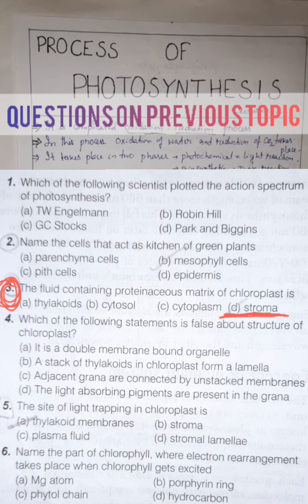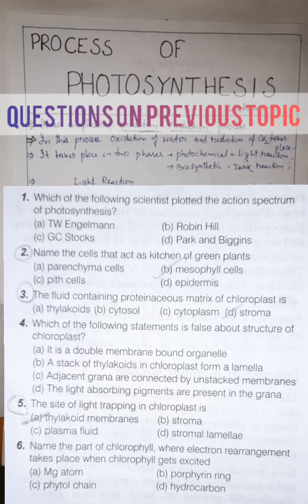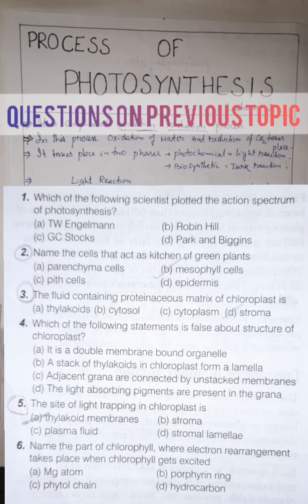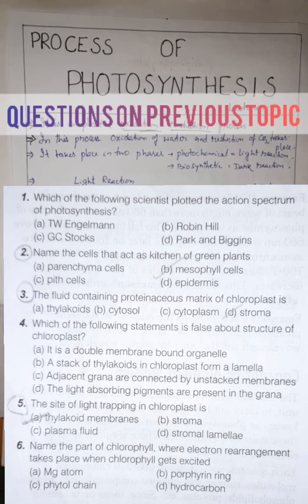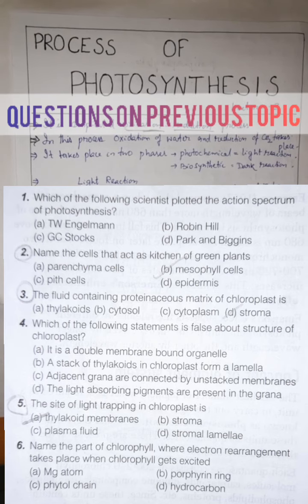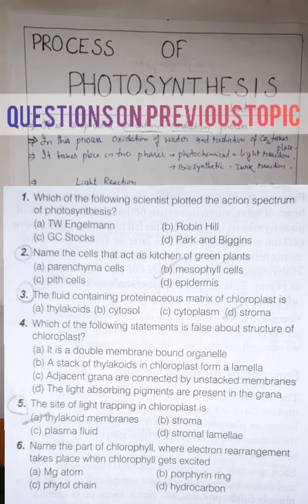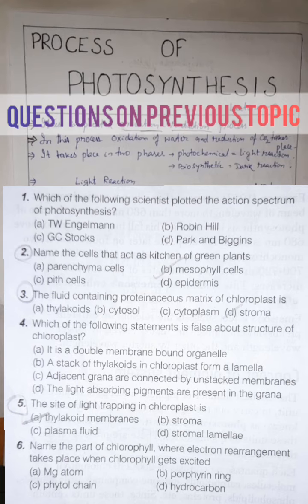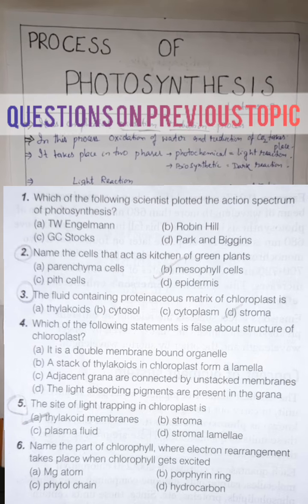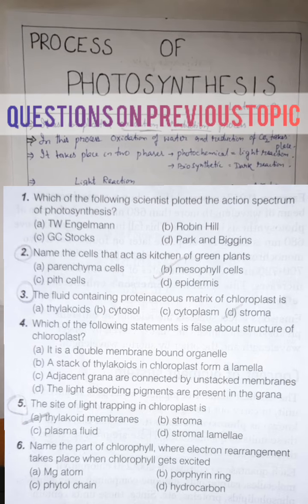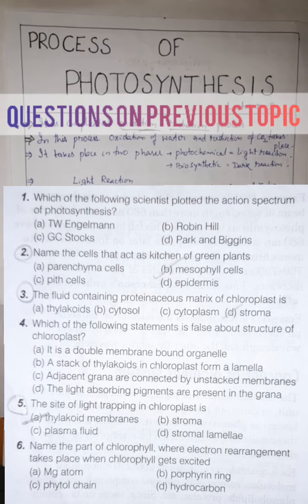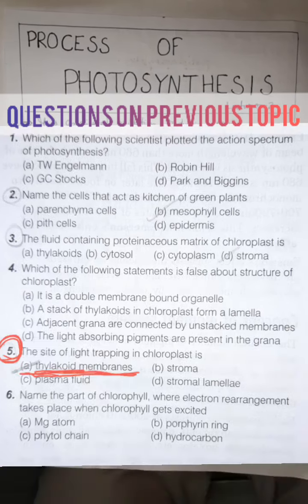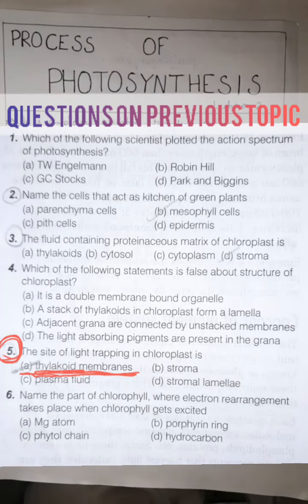Another question: The site of light trapping in chloroplast is — Option A: thylakoid membrane. Option B: stroma. Option C: plasma fluid. Option D: stromal lamella. Answer is thylakoid membrane.